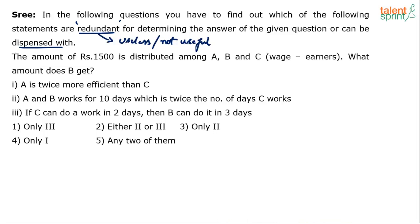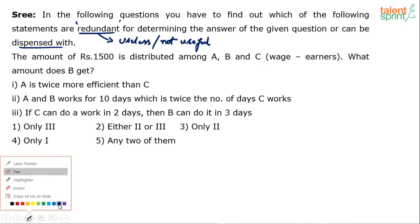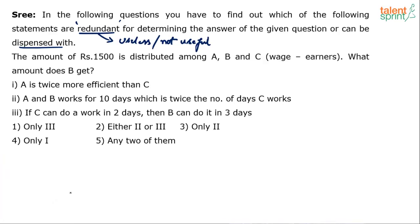Usually this looks like data sufficiency, right? There is a question followed by three statements. The usual case is where we have to find out which of the statements are required. But what most students end up doing is they don't read the directions properly and they find out the statements that are required, which is exactly opposite to what is asked in the question. The question says find out what is not required. So it's very, very important that in such questions — data sufficiency, syllogisms, coded inequalities — read the directions. Are they asking us to find out what is required or what is not required? Are they asking us to find out what are definite conclusions or what are not the conclusions? What follows or what does not follow?